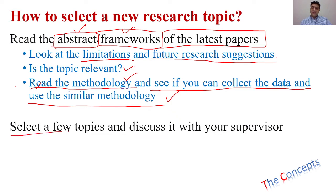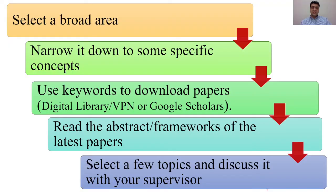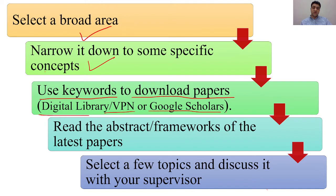After doing this, select a few papers and then talk to your supervisor. To summarize the process: select your broader area, narrow it down to specific keywords, download papers from the digital library, VPN, or Google Scholar, read the abstract and methodology, look at the framework, decide on a few topics, and then talk to your supervisor or a senior who can guide you further.